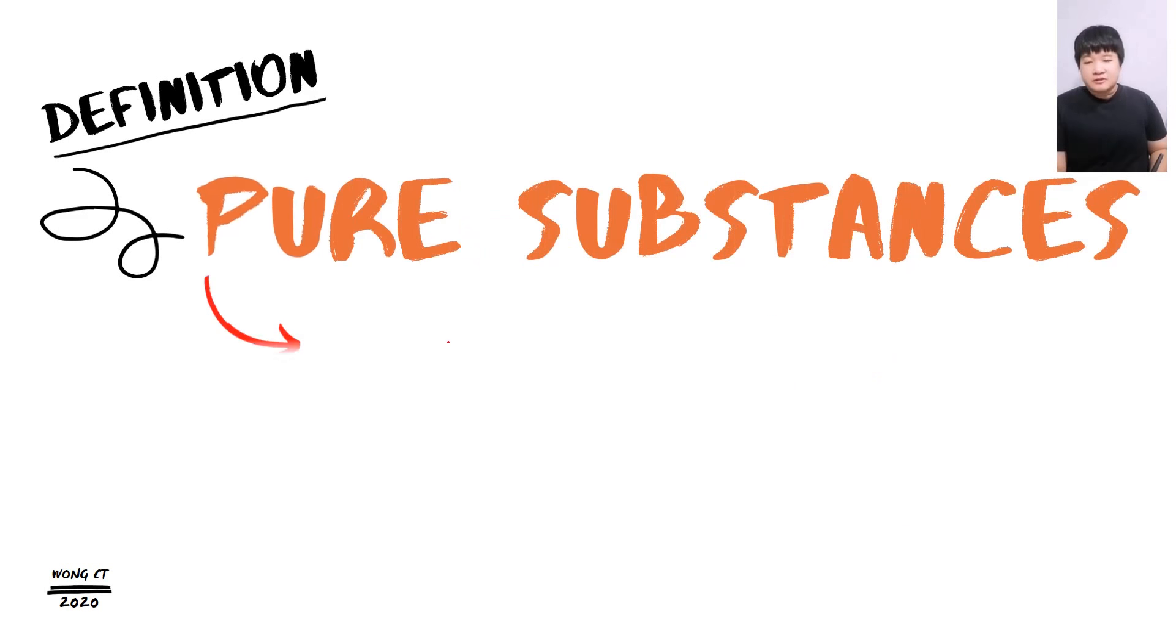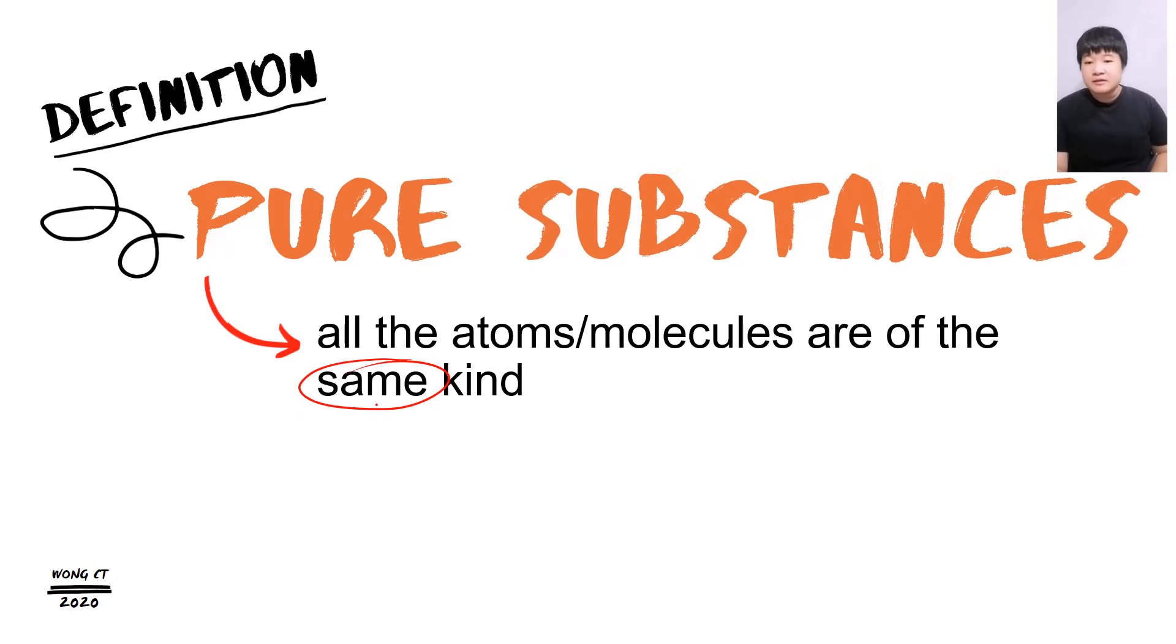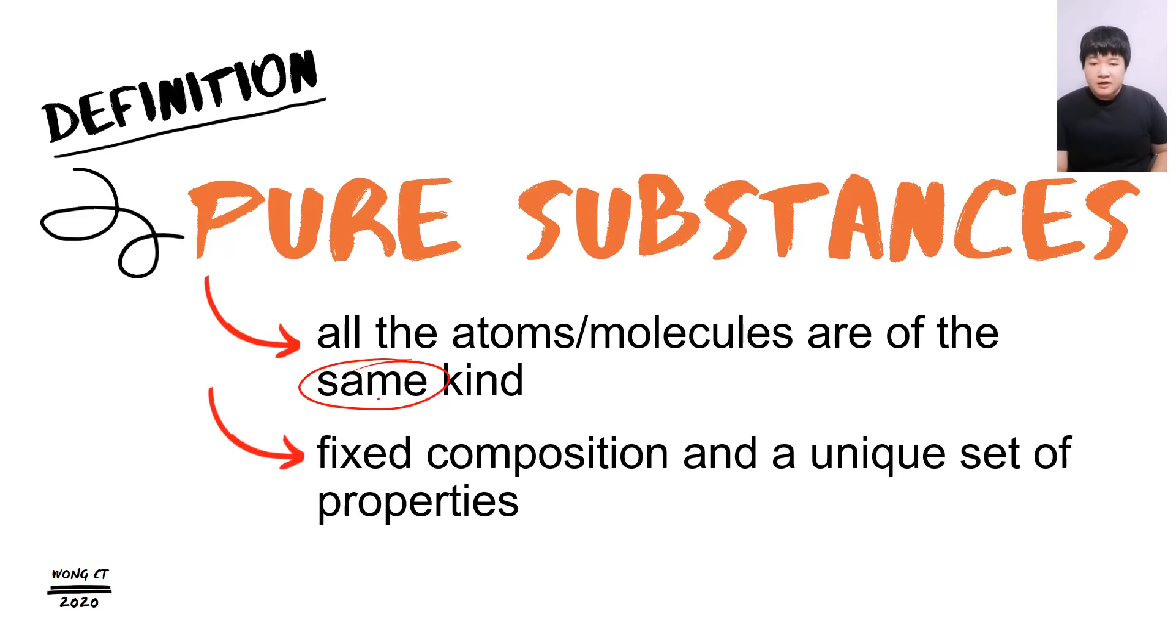Pure substance is when all the atoms or molecules are of the same kind, means they must be the same. And pure substance must have a fixed composition and a unique set of property. They are going to have the same kind, fixed composition and the same set of unique properties.